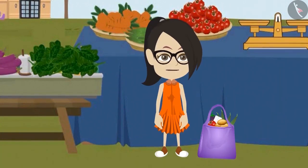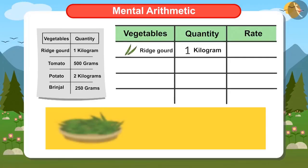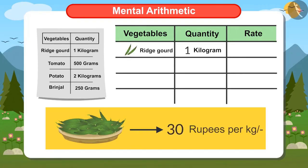I have bought a kilo of ridge guard. The price of ridge guard is 30 rupees a kilo. Hence, I have to pay 30 rupees for the ridge guard.